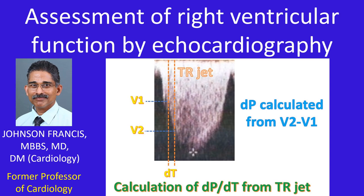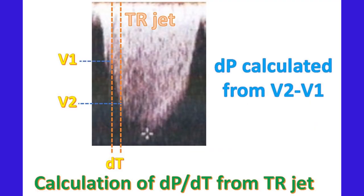Right ventricular systolic function can be evaluated in terms of right ventricular fractional area change and right ventricular ejection fraction. There are other Doppler and strain imaging methods as well. Right ventricular dp/dt, or rate of rise of right ventricular pressure, can be estimated from the tricuspid regurgitation Doppler jet. While the left ventricular dp/dt is over 1200 mmHg per second, that of the right ventricle is over 400 mmHg per second.